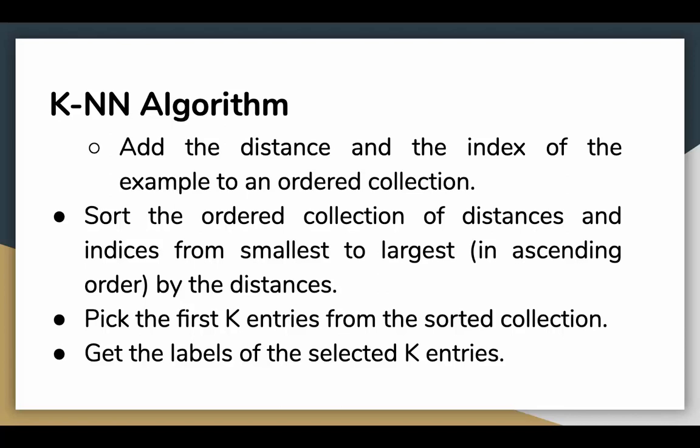Next, we add the distance and the index of the example to an ordered collection, for example a dictionary. Sort the ordered collection of distances and indices from smallest to largest in ascending order. Pick the first K entries from the sorted collection and get the labels of the selected K entries.